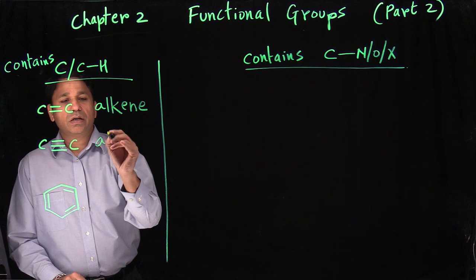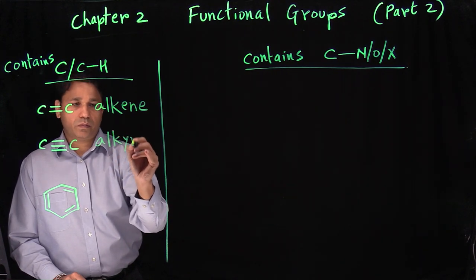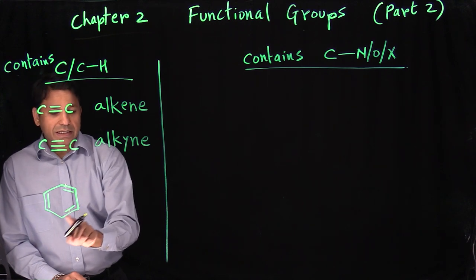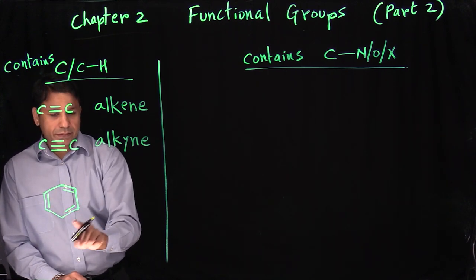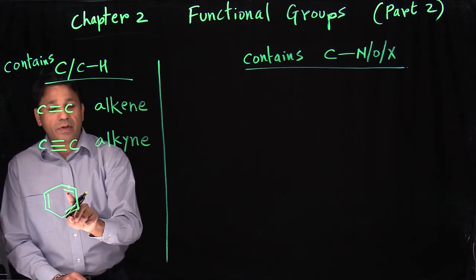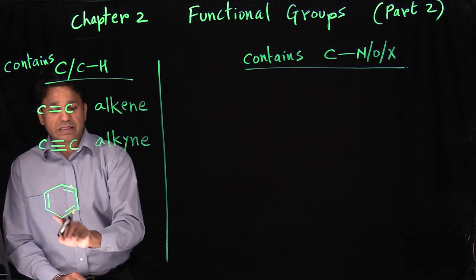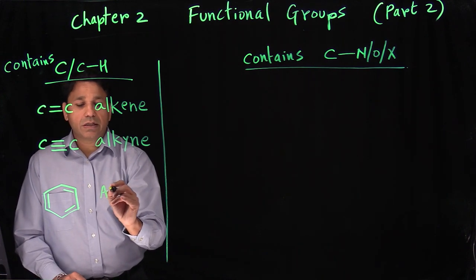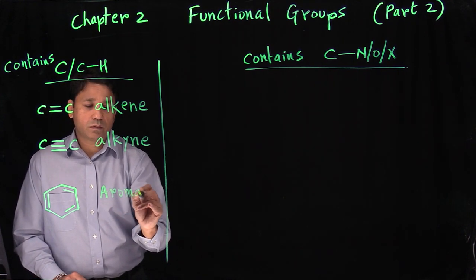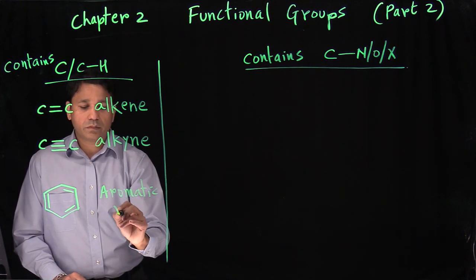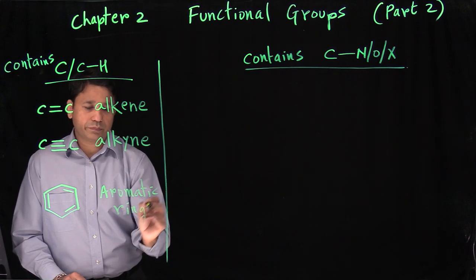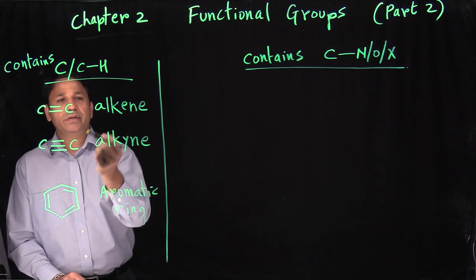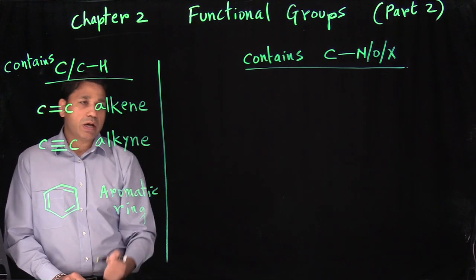A triple bond is alkyne. And when you have a six-carbon ring with alternating double bonds — double, single, double, single — we call that aromatic. So we only have three functional groups in this category: alkene, alkyne, and aromatic.